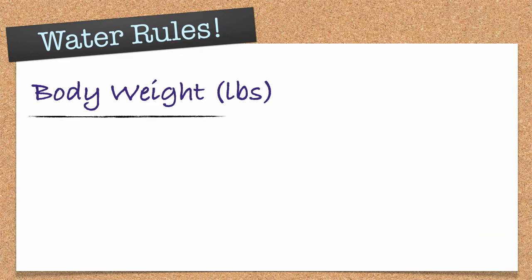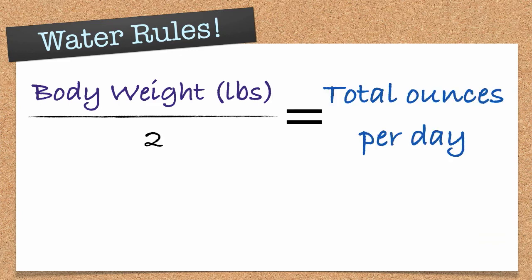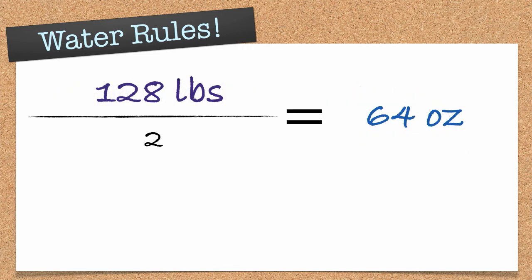Start with your body weight in pounds and divide it by two. This is how many ounces of water you should be drinking per day. So a 128 person should be drinking 64 ounces of water per day.